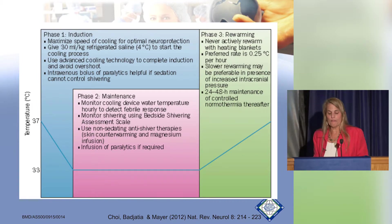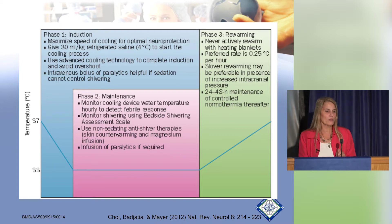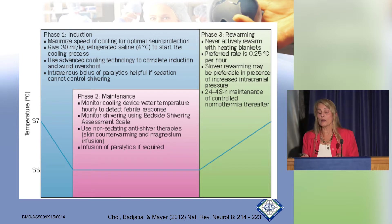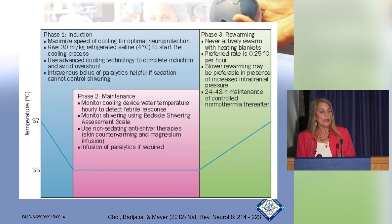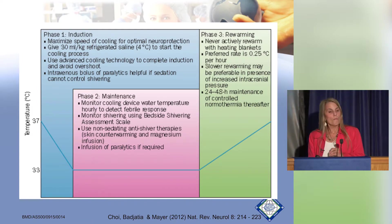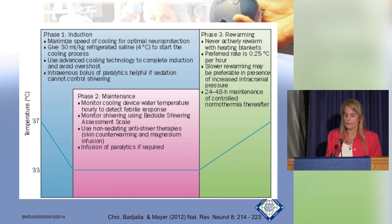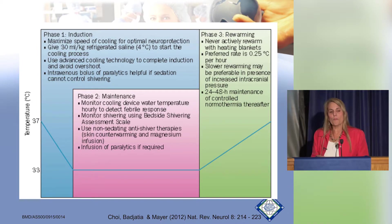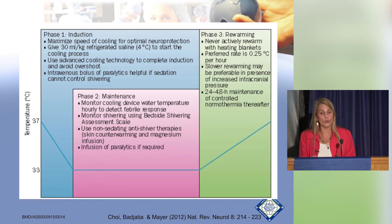The rewarming phase is a critical period — this is where problems occur. If we rewarm too fast, we may end up with increased intracranial pressure. Rewarming may take a day or two with only passive rewarming initially, no active rewarming. Then it's suggested to maintain active normothermia for at least 24 to 48 hours, possibly longer.